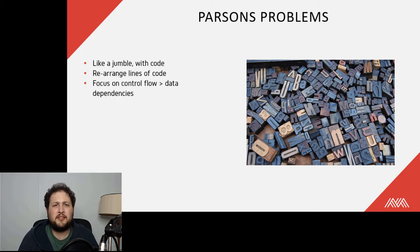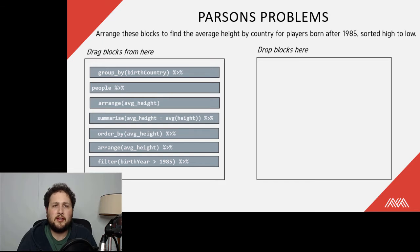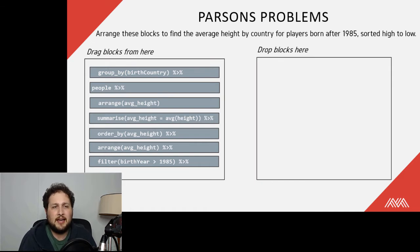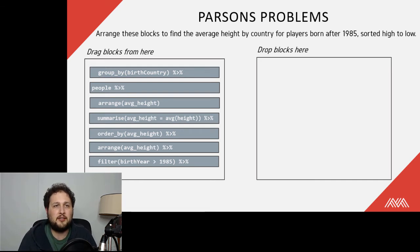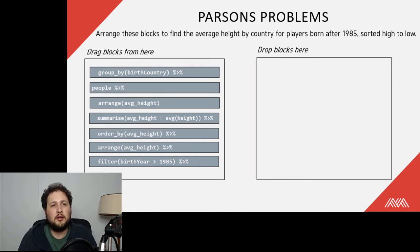There's a lot to say for Parsons problems. Here's an example in R — we have a few lines of code, and if you're a dplyr or R user you'll know that we might have a couple of distractors, or incorrect answers in the block, meaning you don't necessarily need to use all those blocks to get to the correct answer. What you would do is drag and drop from the left box to the right box. There are some tools online to build interactive versions like this.